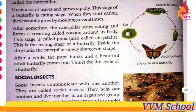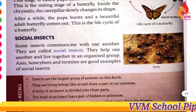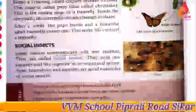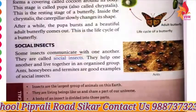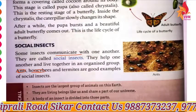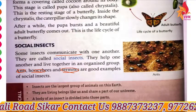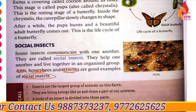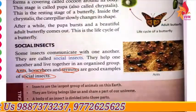Next we have social insects. What is a social insect? Some insects communicate with each other. Social insects live in groups. Examples of social insects are ants, honeybees, and termites — these are good examples of social insects.